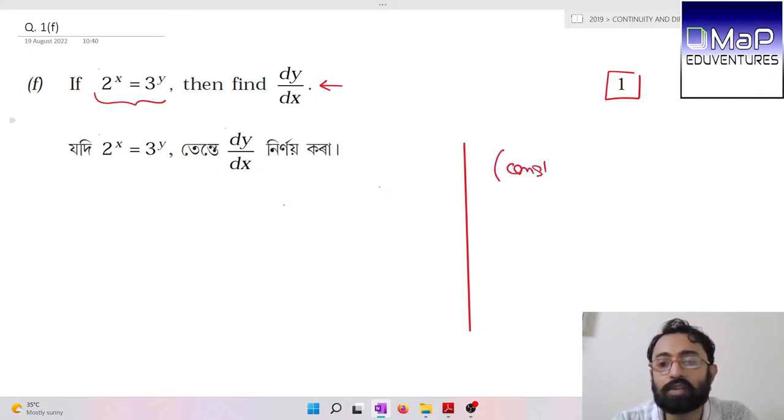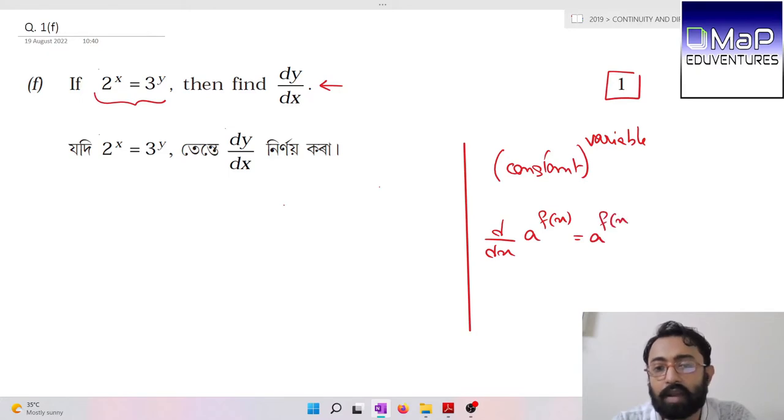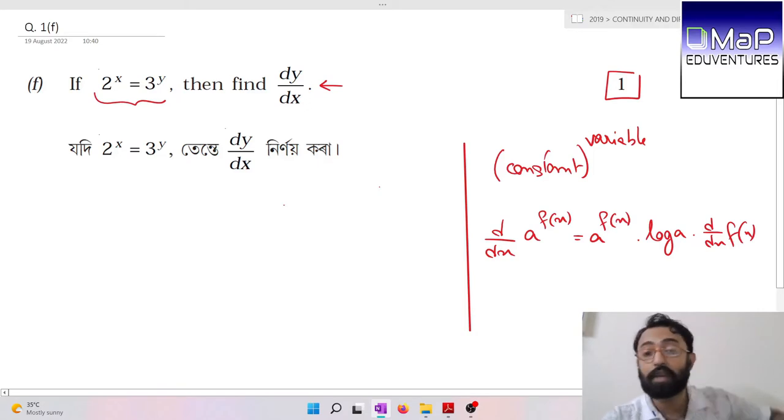It is a constant to the power variable. In general, a to the power f(x), where f(x) can be any function. When we differentiate, d/dx of a to the power f(x) equals a to the power f(x) times log a times d/dx of f(x). This is the formula for a to the power f(x).